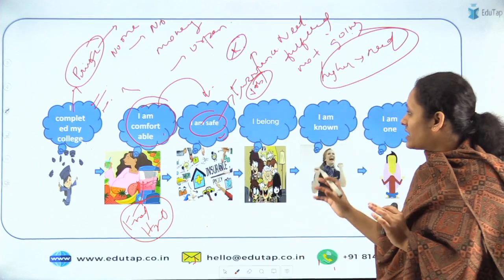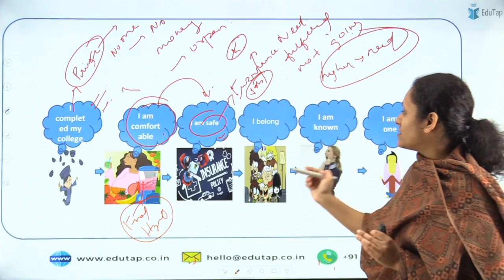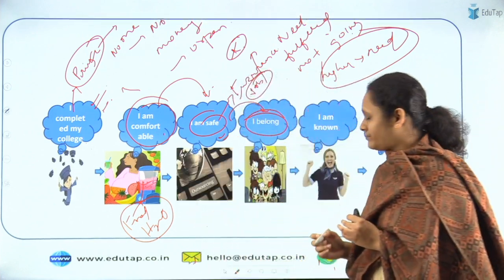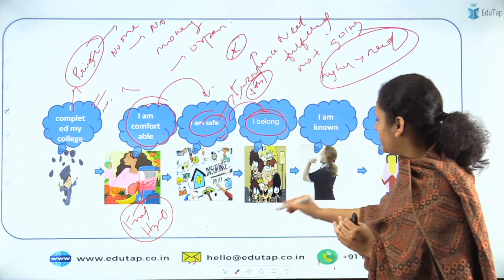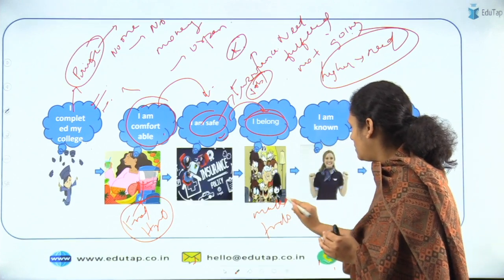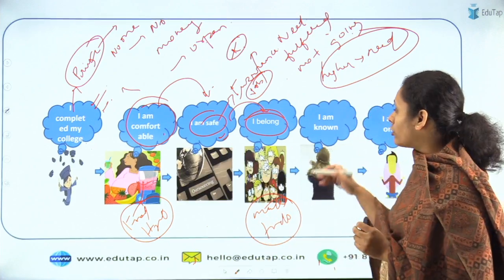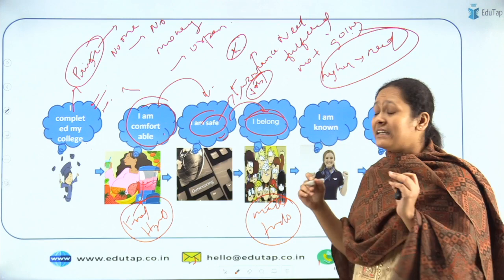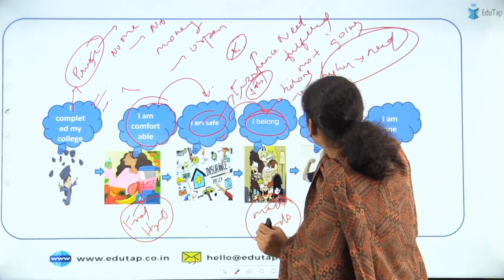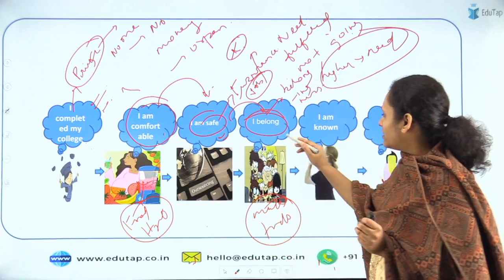Let's say she gets a job and settles there nicely. The next stage is that she wants to feel belonged — she wants to make friends. No one would like a job where you go and sit and no one talks to you. She needs a sense of belongingness. This is what the next step is.